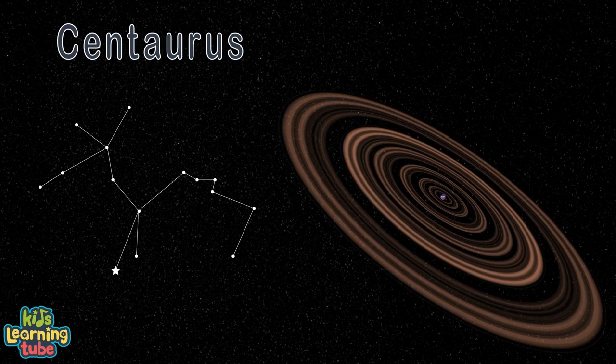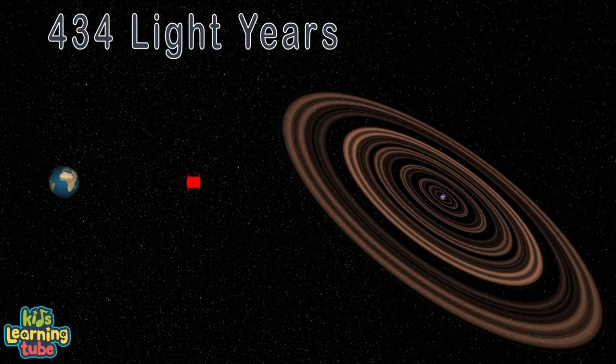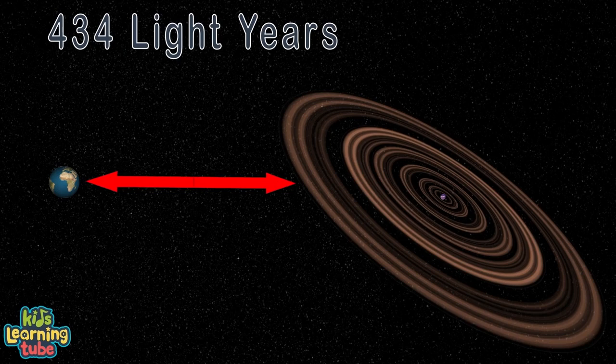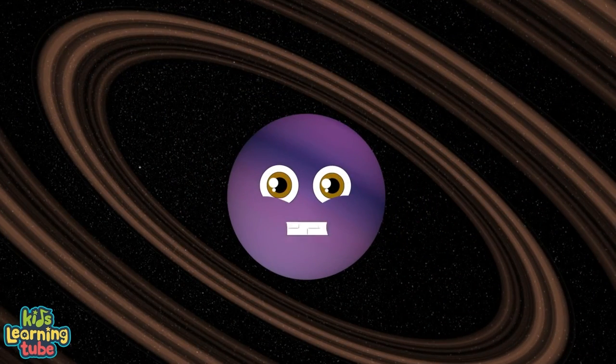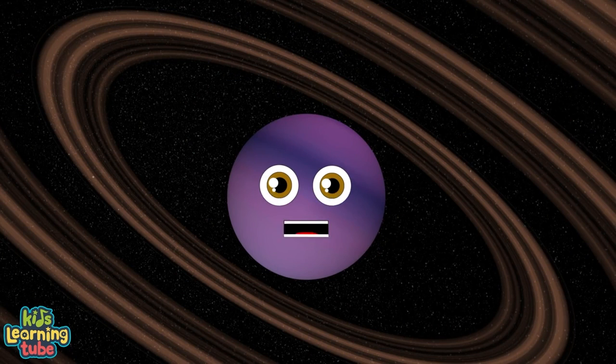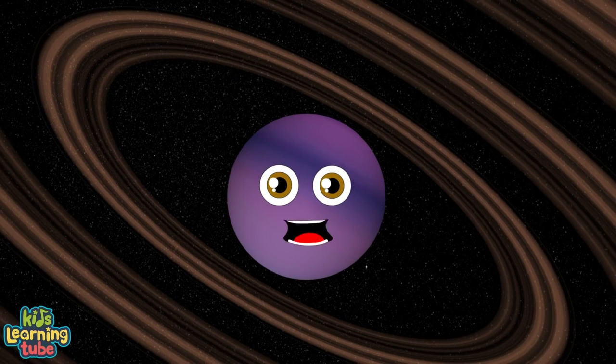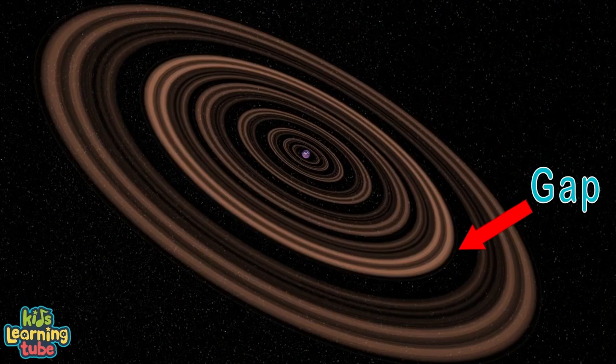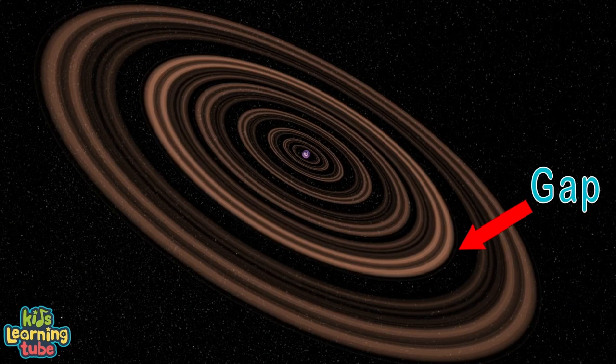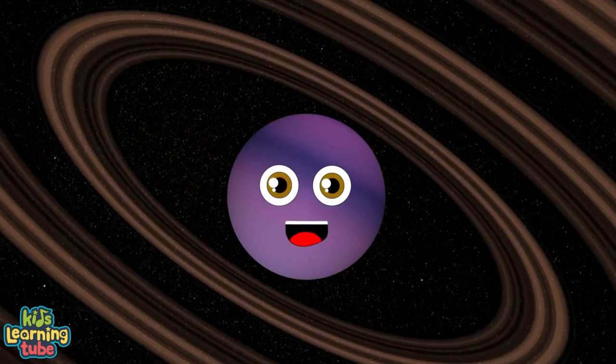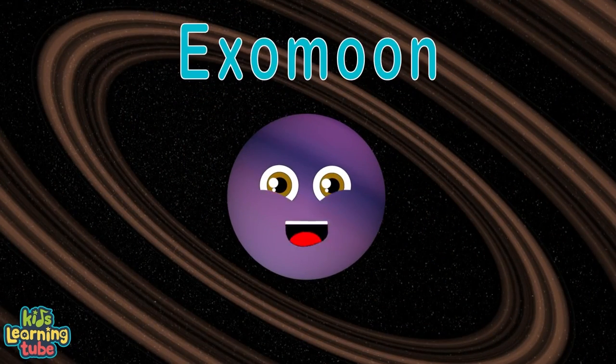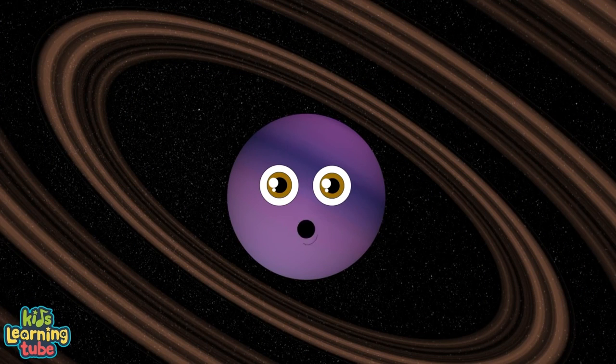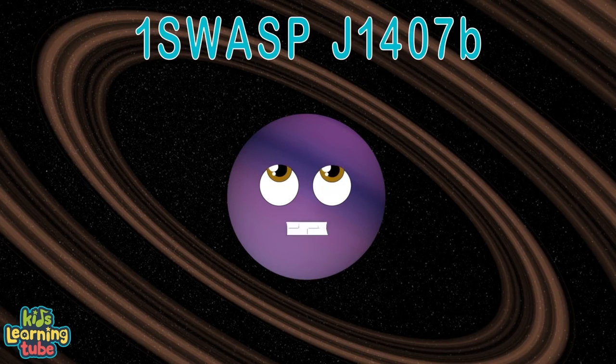I'm within the constellation of Centaurus. It's about 434 light years from the Earth. No one knows if I'm a gas giant or a brown dwarf with rings. There's a gap in my rings, which probably means one thing: it may have been made by an exomoon of mine. I also have another name. It is 1SWASP J1407B.